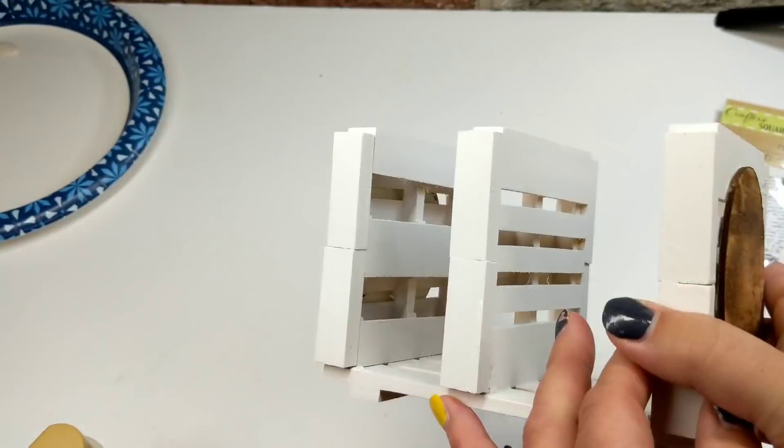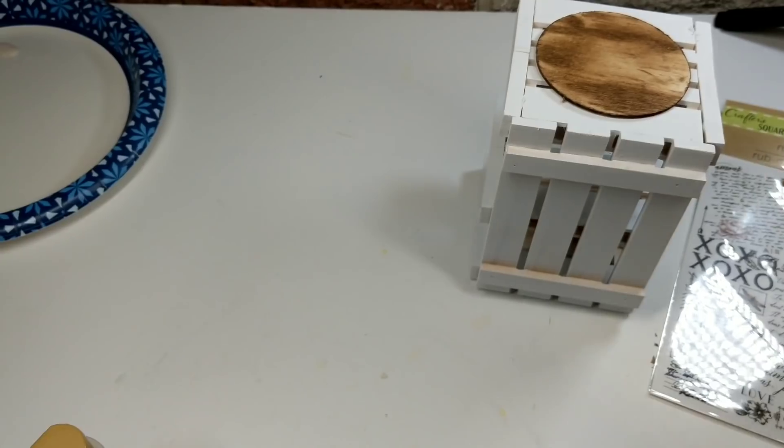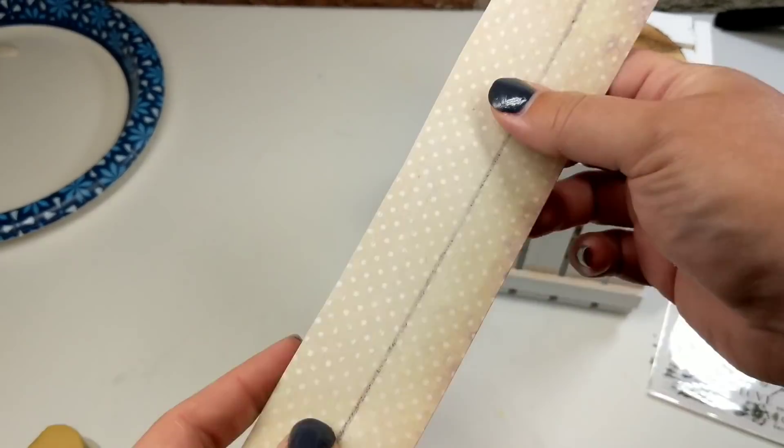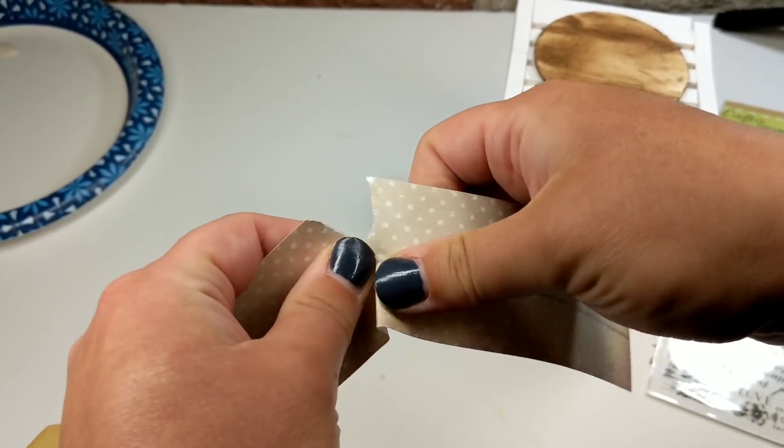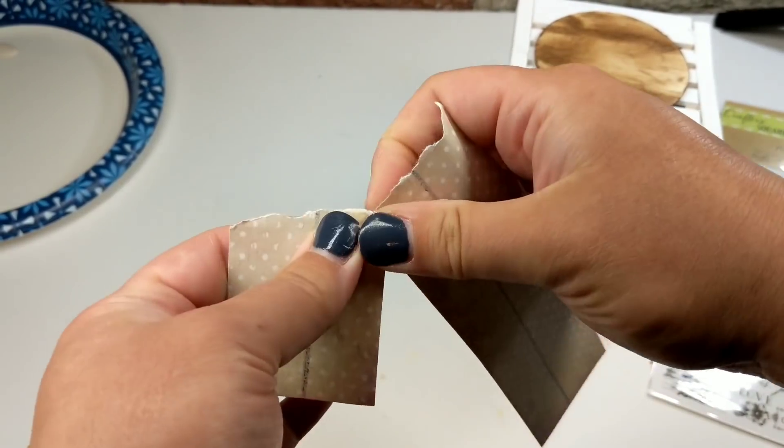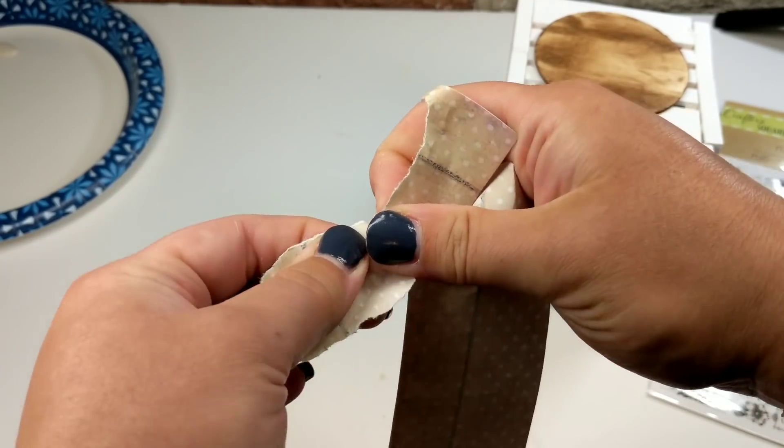So, I took these little wood rounds I purchased at Walmart and I just took some antique Waverly Wax, rubbed it on there, and then we're taking this paper I got from Hobby Lobby and just kind of ripping it up. I wanted to use this aesthetic to try and make them all match.